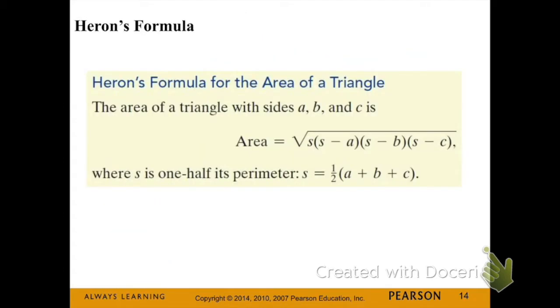Next, we're going to look at another formula for area of a triangle. This is Heron's formula. So a couple things to note in here. Our side lengths are little a, little b, little c, and s is one half of the perimeter of the triangle. So this is a formula we're going to use when we know all three of our side lengths.